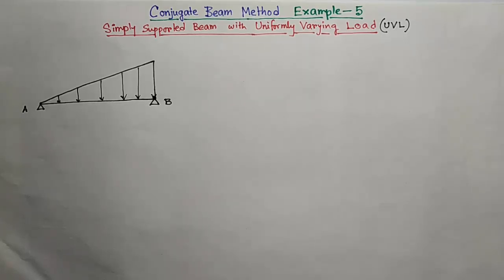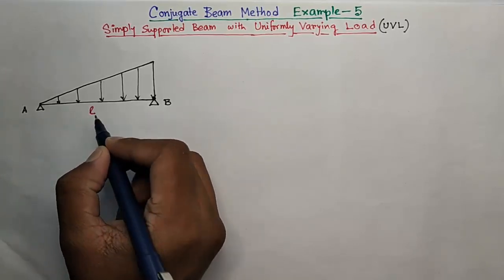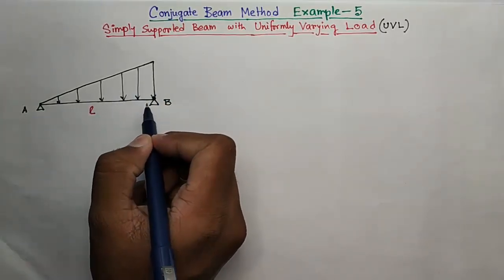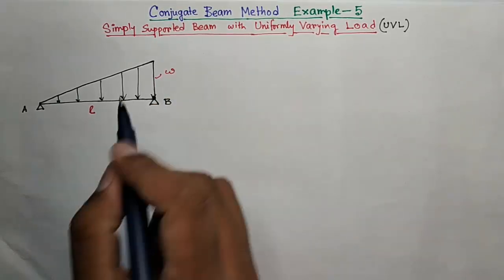Hello everybody, welcome to Being Civil. This is Example 5 of the Conjugate Beam Method. Here a simply supported beam AB of length L is subjected to a uniformly varying load of maximum intensity W per unit length.